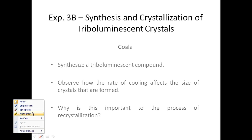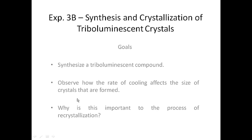In the second part of experiment 3, we're going to look at the way that crystals form in the recrystallization process, primarily to determine what conditions will give us large, well-formed crystals that make a good recrystallization solvent in experiment 3a. The goals of this experiment — synthesis and crystallization of triboluminescent crystals — include synthesizing a triboluminescent compound using microwave heating with an ordinary microwave, and then observing how the rate of cooling affects the size of the crystals formed.